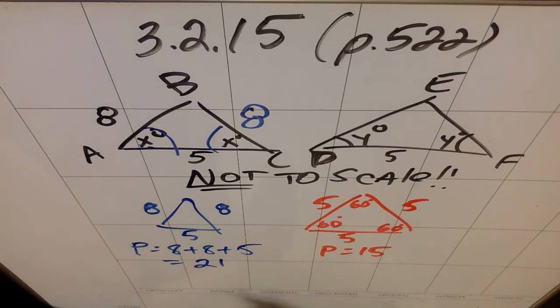The question was, how much bigger is this perimeter than this perimeter? 21 minus 15 is 6, which is answer C.